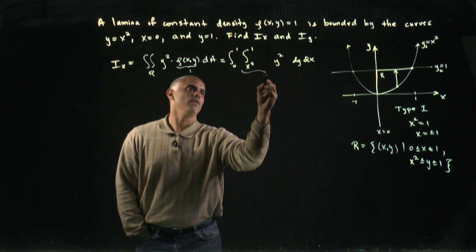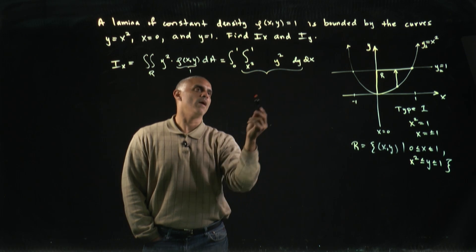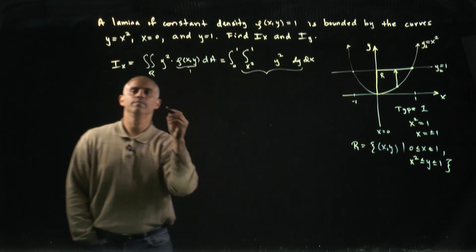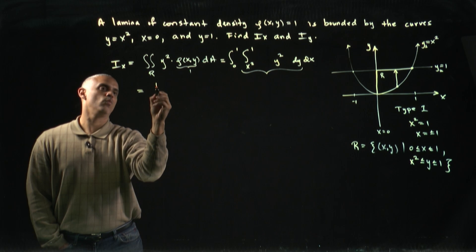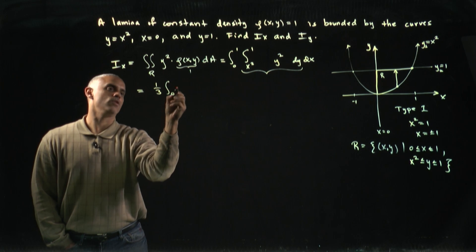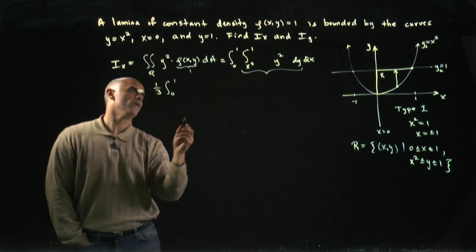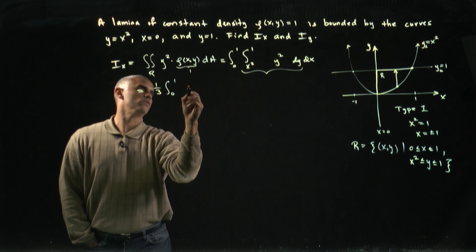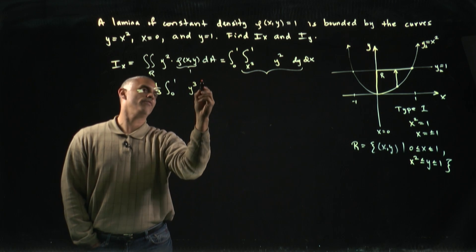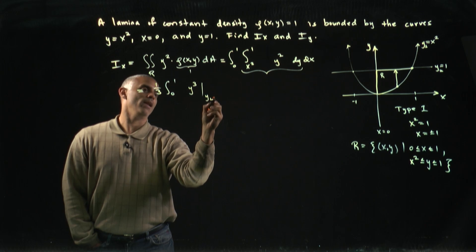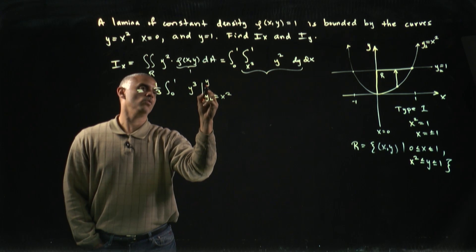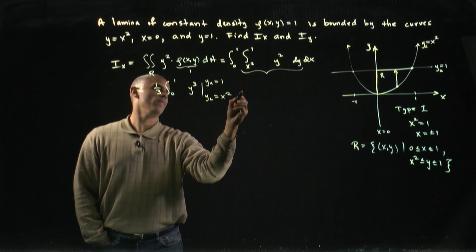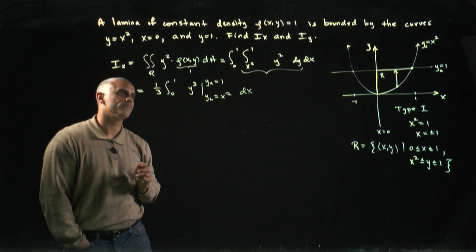Now, if I integrate the iterated integral, I'll get a third y cubed, so this becomes one third. I can still write the integral from 0 to 1, and this becomes y cubed evaluated from y lower equals x squared to y upper equals 1 dx.